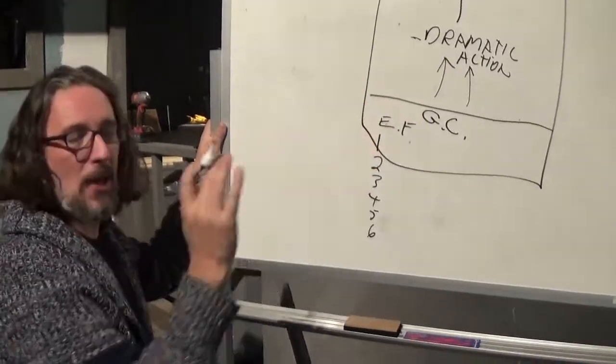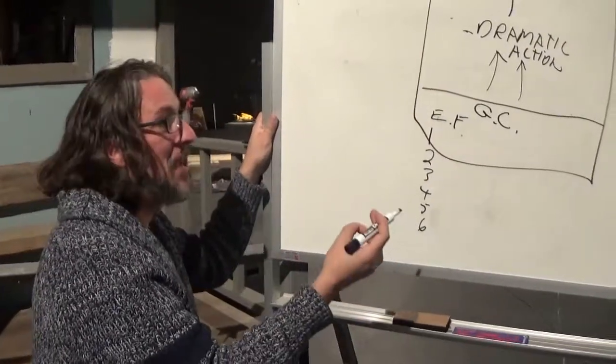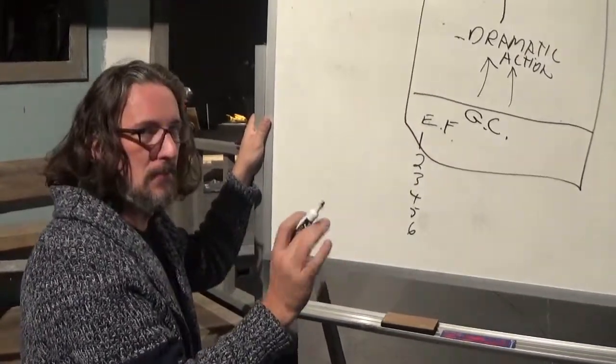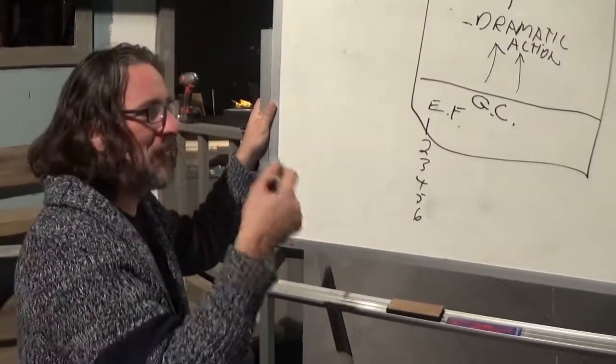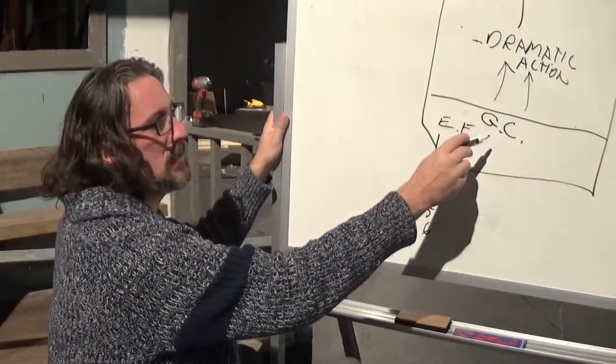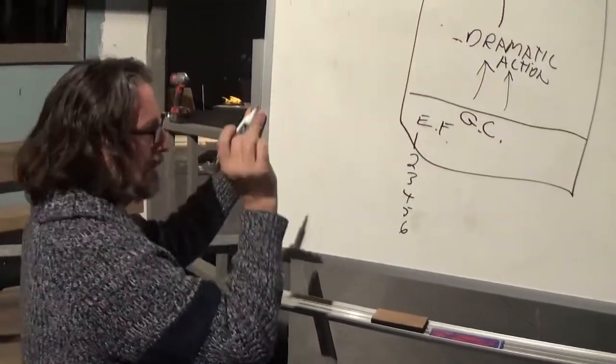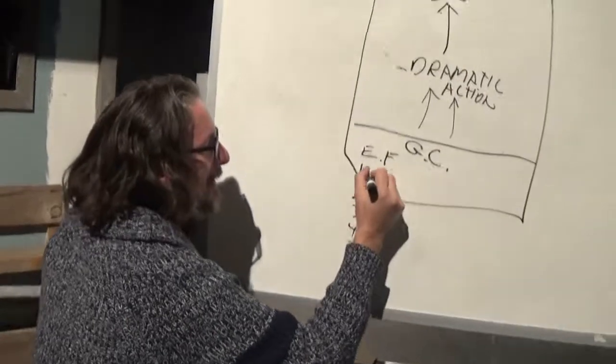You figure this out by what's in the script or what's implied, and then not so much about what's imagined, although that's in there. But for what's in the script or what's implied, we're going to look for the given circumstances, the three I's. And then first off, the environmental facts. So the first one is the location.